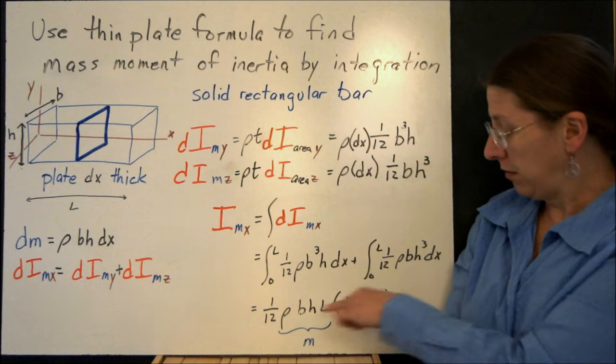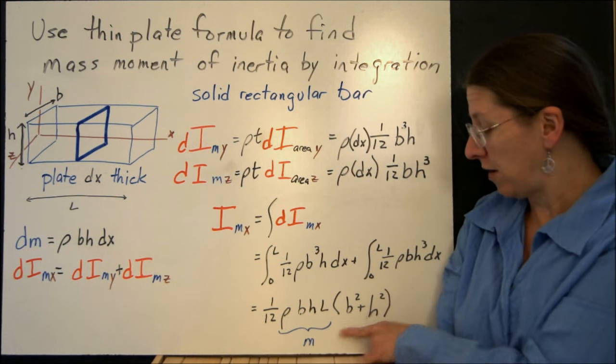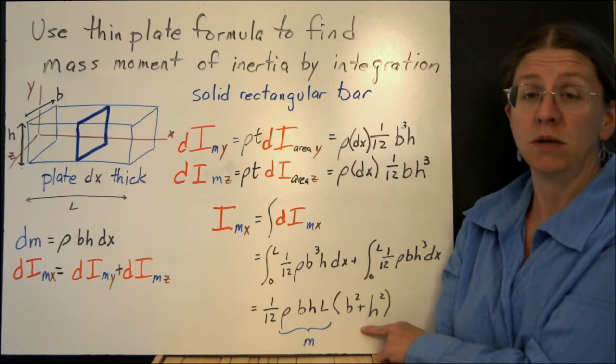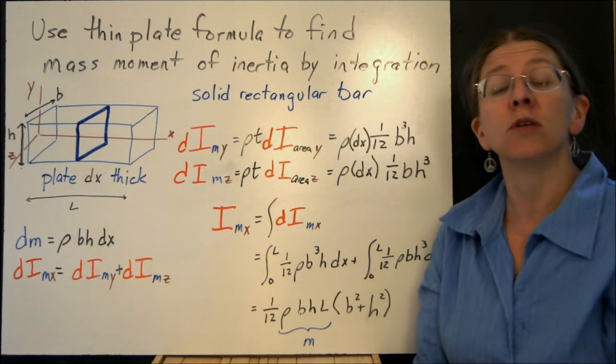And if I plug these into that formula, what you end up with is 1/12 times the total mass of your object, b² plus h². And that is what you would get if you looked it up in a table.